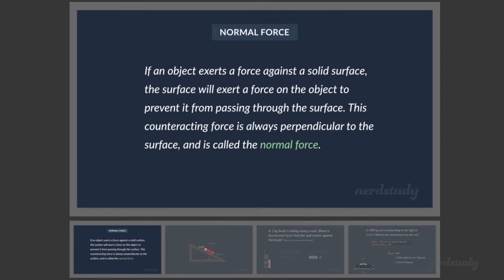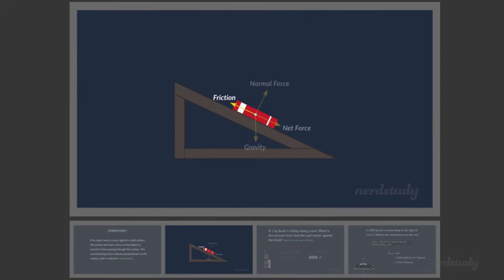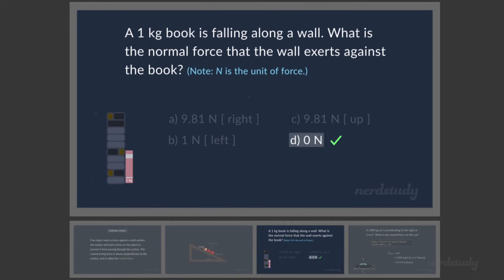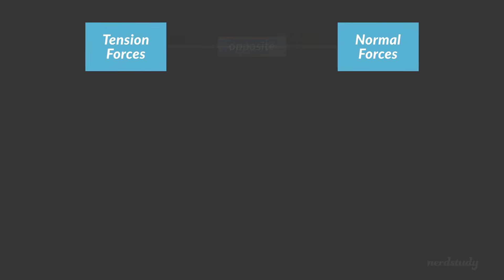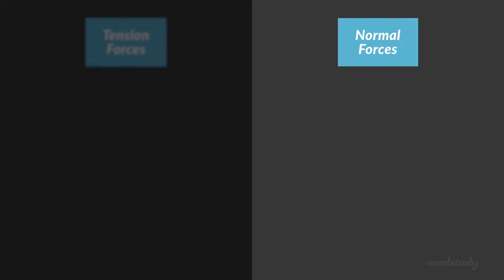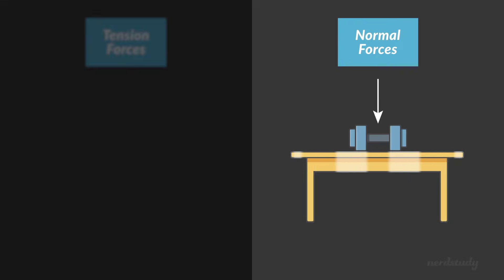Now, if you don't remember what a normal force is, we encourage you to watch our videos on normal forces. Very briefly, we can say that a normal force occurs when a surface, like a table, resists being compressed by a force. The surface applies a force which prevents an object from moving into the surface, and we call that the normal force.